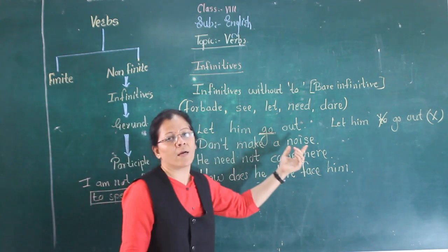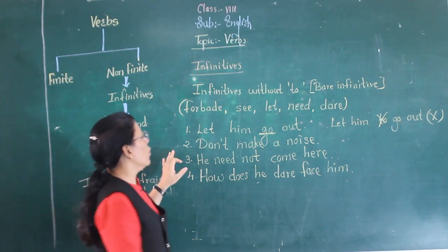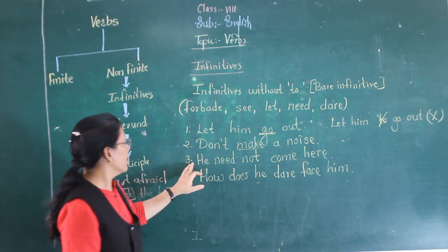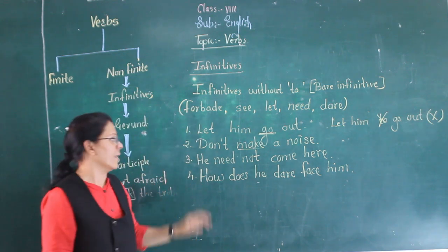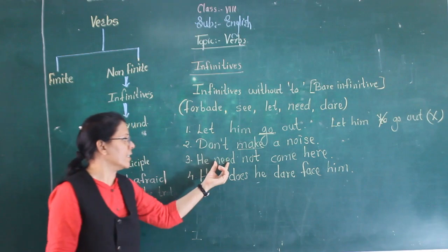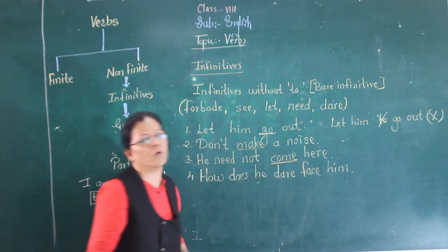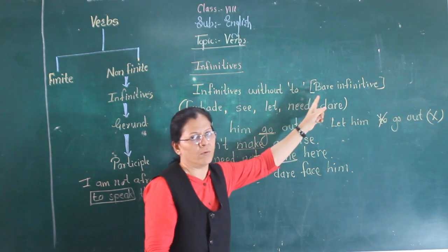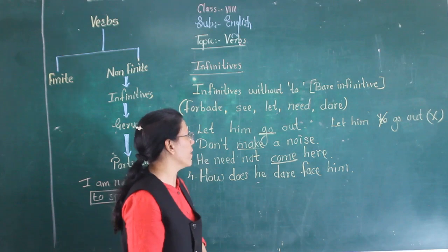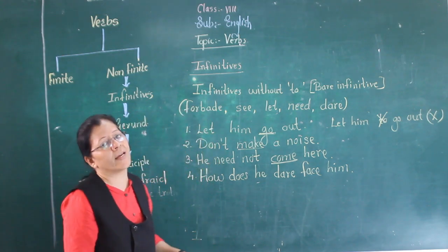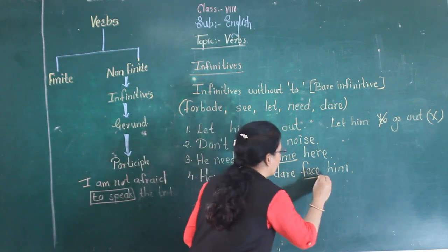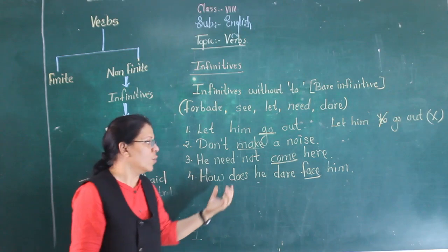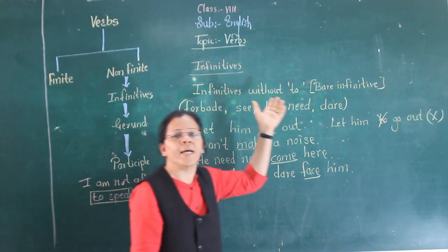Next example: 'Don't make a noise.' Here, 'make' is used without 'to'. Next: 'He need not come here.' There is 'need' in the sentence, so 'come' is used without 'to' — it is a bare infinitive. Next: 'How does he dare face him?' Here, 'face' is used without 'to'. You cannot say 'How does he dare to face him' — that is totally wrong. These are the words that take bare infinitive.